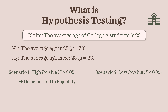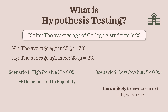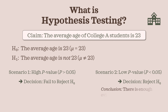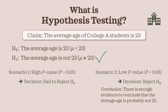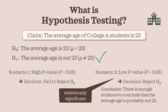Scenario 2: we could obtain a low p-value, or a p-value less than 0.05. This means our sample — the evidence — is too unlikely to have occurred if the null hypothesis claim were true. So we reject the null hypothesis and conclude that the average age is probably not 23. This result is called statistically significant. That is, when we reject the null hypothesis, we say the result is statistically significant.